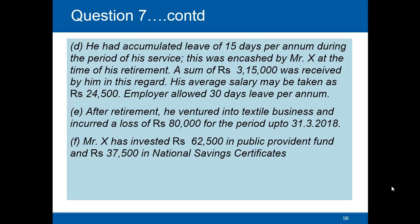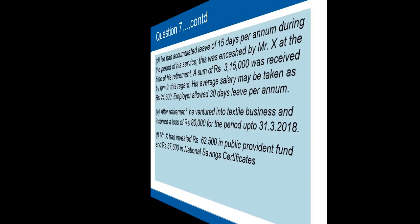After retirement he ventured into textile business and incurred a loss of rupees 80,000 for the period up to 31st March 2018. Mr. X has invested rupees 62,500 in Public Provident Fund and rupees 37,500 in National Savings Certificates.